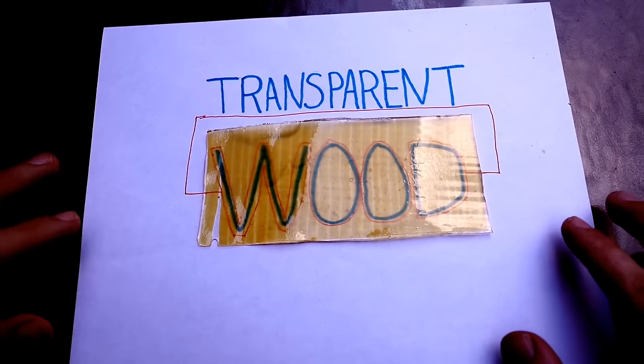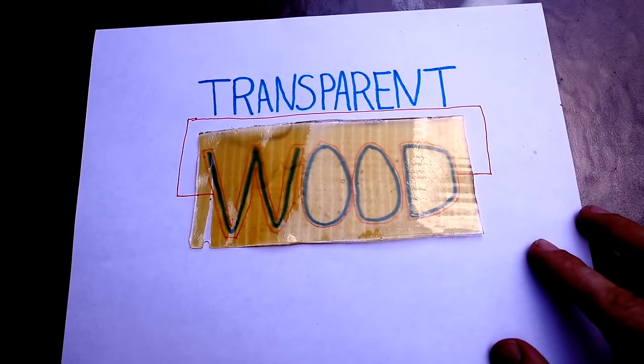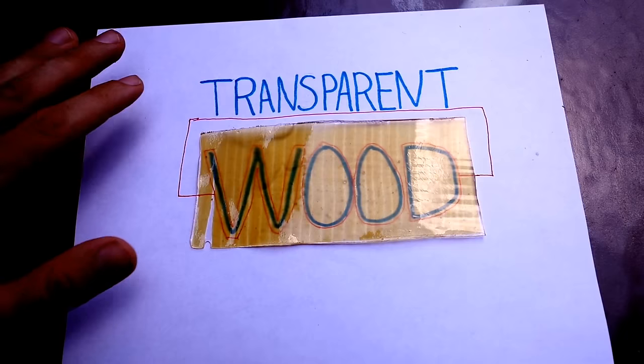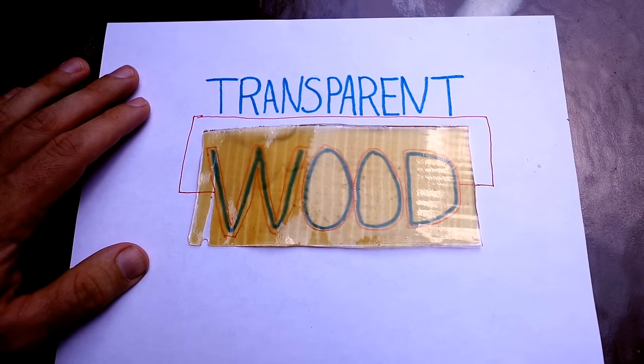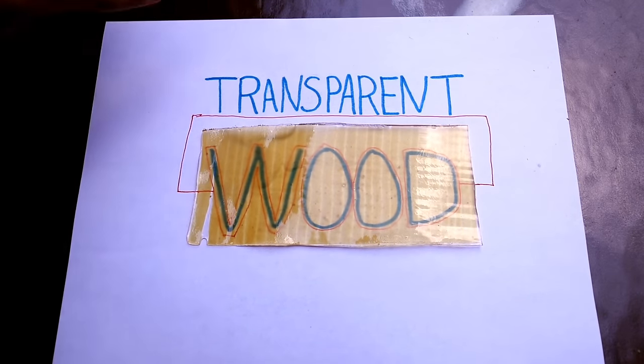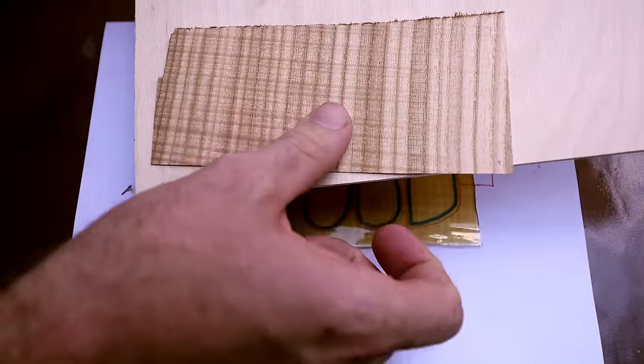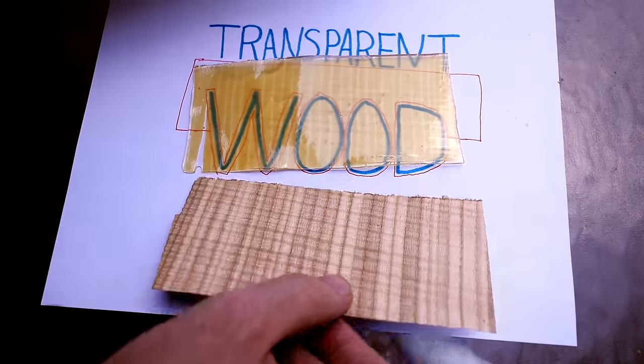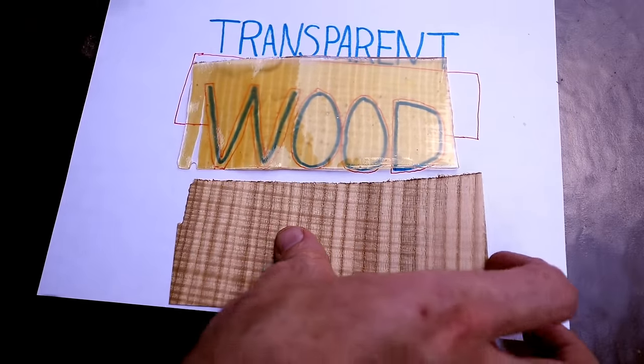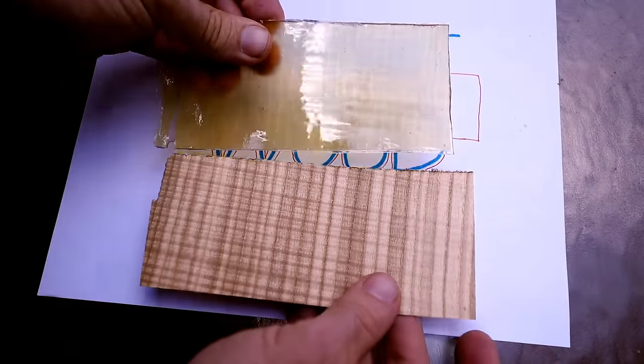I'll give you the full recipe in the how-to article, but the basic way to do it is you take ordinary wood. This is how this started. So this piece of wood right here actually started out just like this.